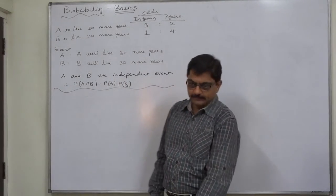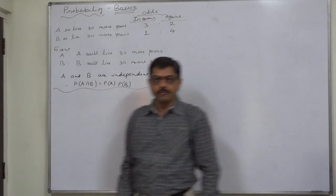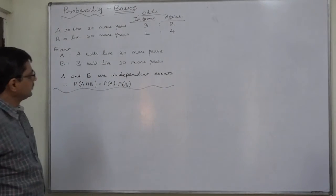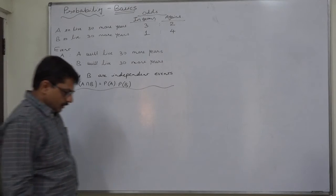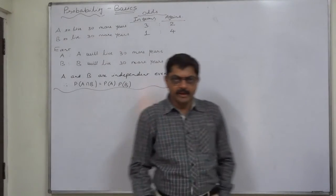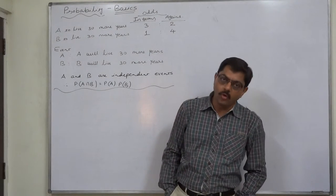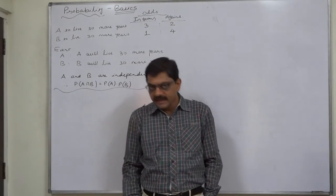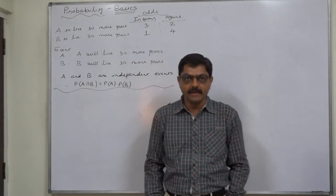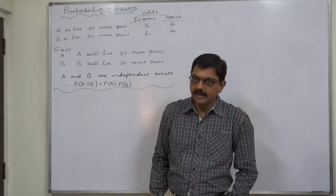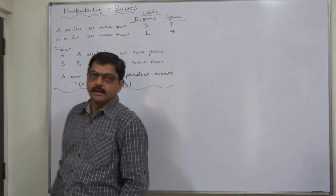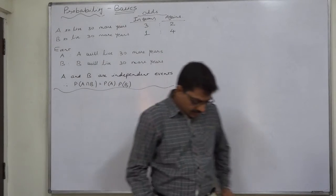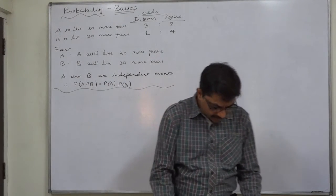Hello and welcome. A new case of probability — basic calculations. This time we take a problem having information in terms of odds in favor of any event or odds against any event, also involving the case of two independent events.